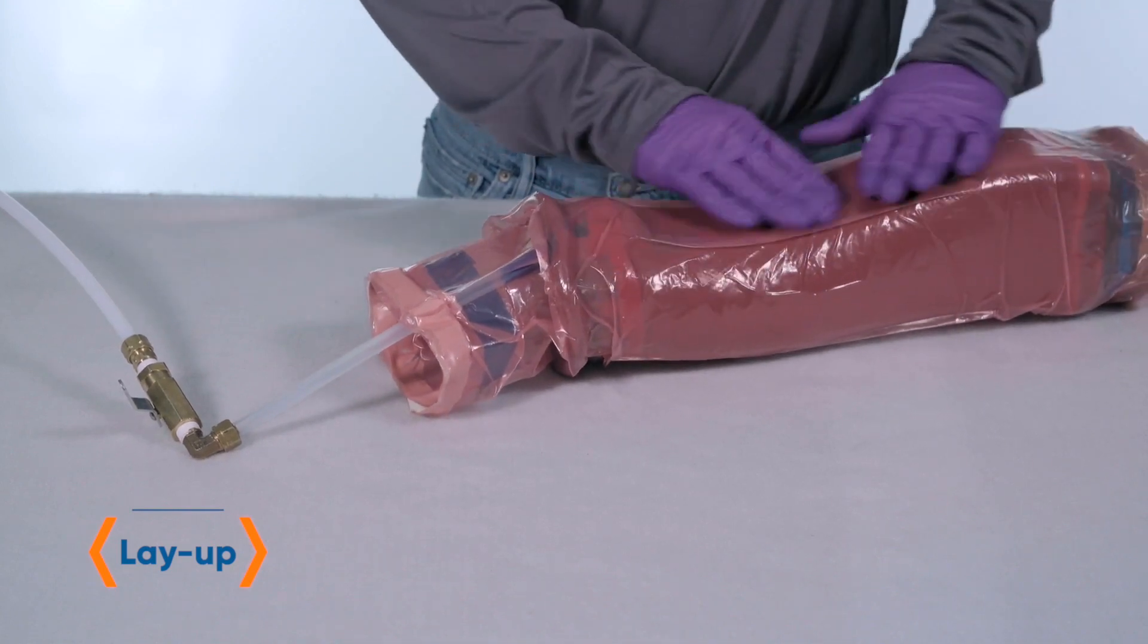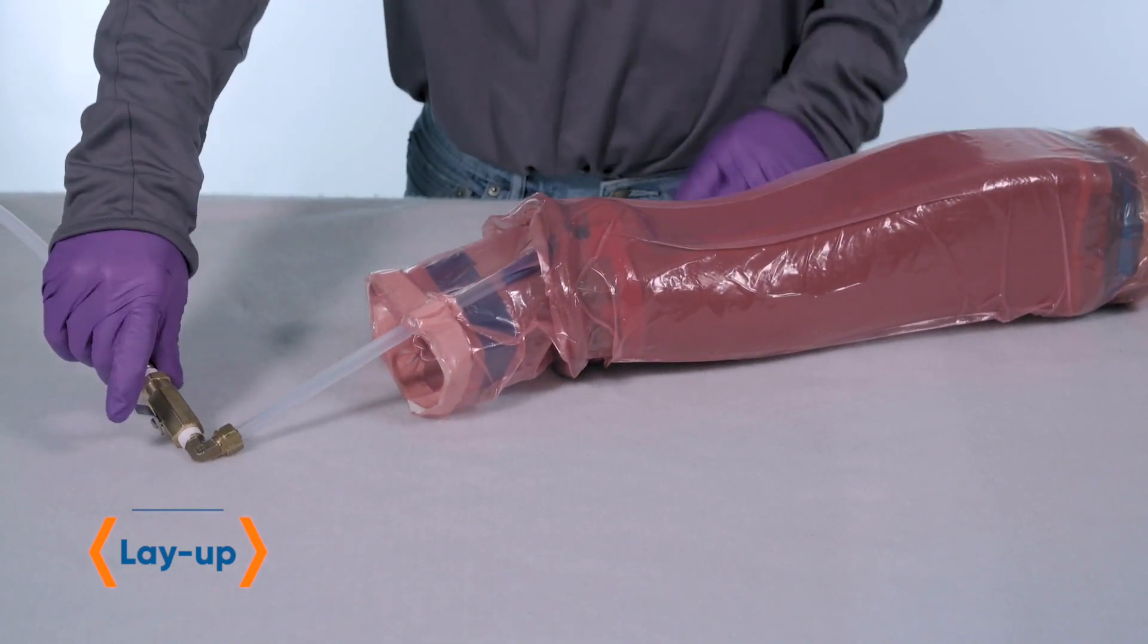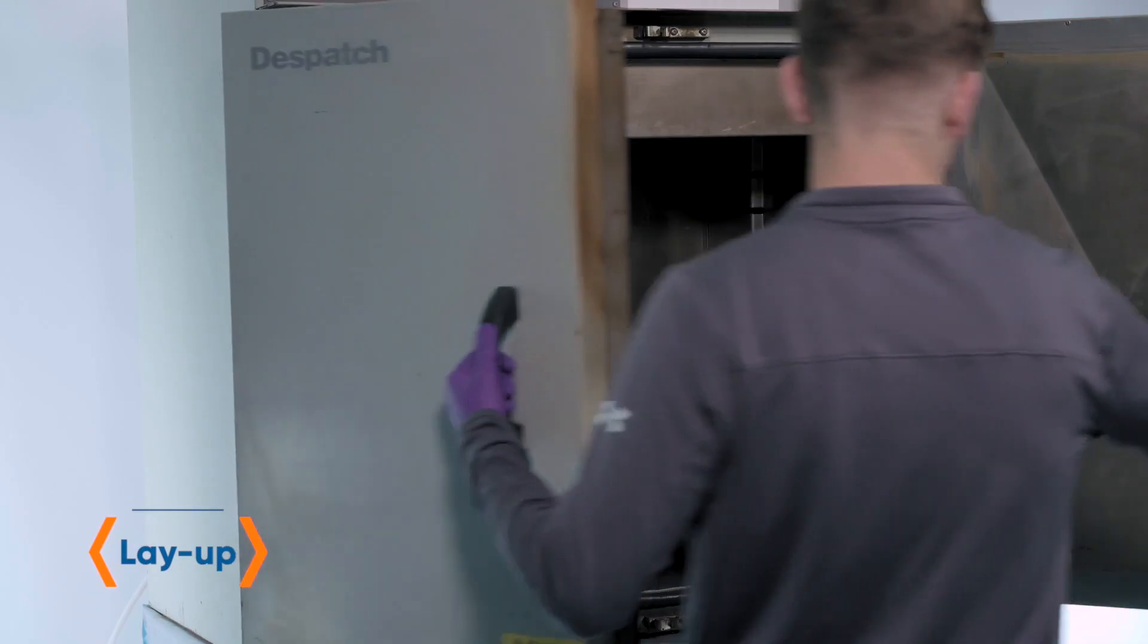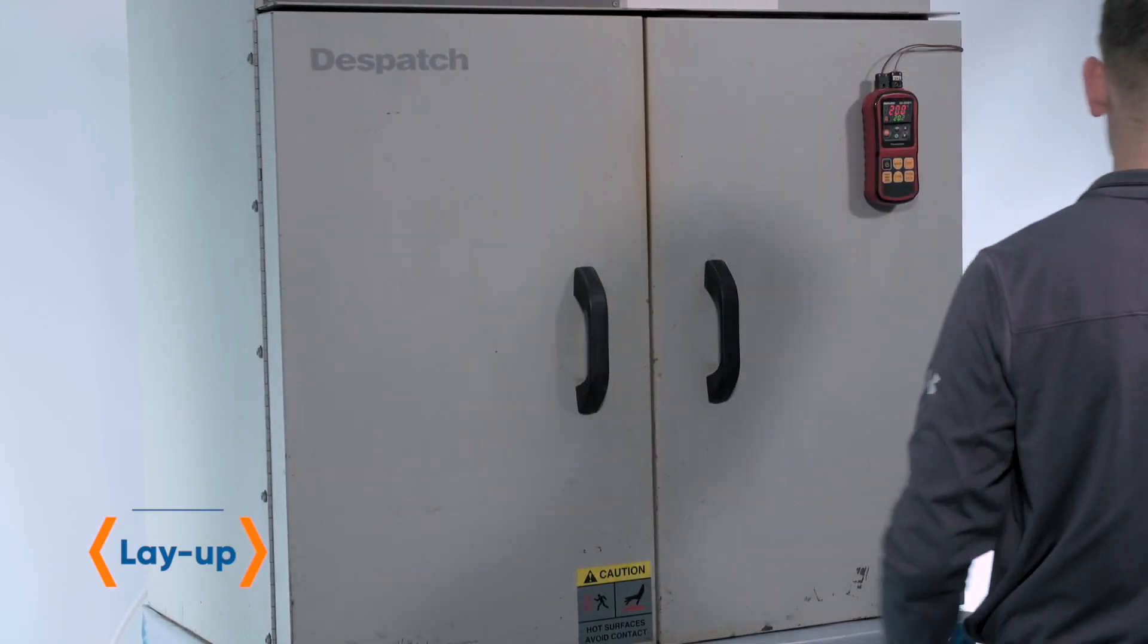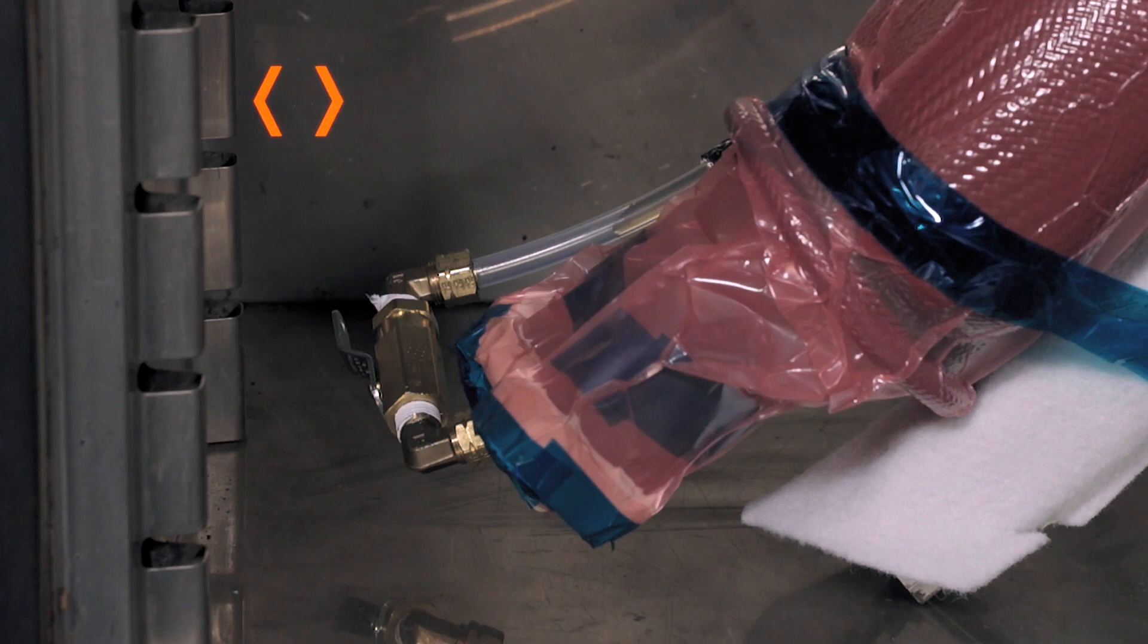Before the vacuum-assisted resin transfer molding process and cure cycle, the laid-up Smart Tool is placed into the oven to ensure the carbon fiber socks are completely dry.